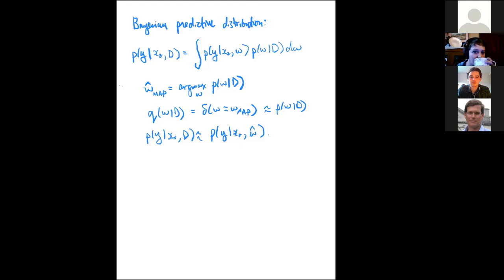The posterior will be very different from a concentrated distribution when we're considering really large neural networks, which can express many different solutions corresponding to different parameter settings — often relatively compelling but complementary solutions. There have been many great motivations historically, especially in the 90s, for following a Bayesian approach in large neural networks. There are also new motivations, like topological properties of the posterior, such as mode connectivity — showing you could walk from one SGD solution to another in a subspace without increasing the training loss much.